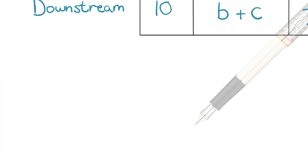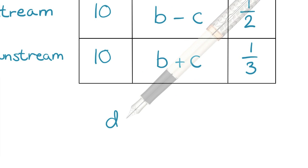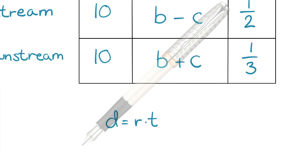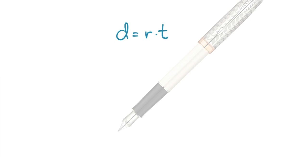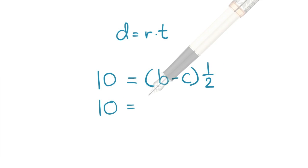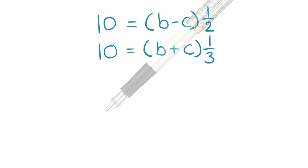Let's begin to solve the problem. In a uniform motion problem, we use the equation distance equals rate times time. Since we have two unknowns, b and c, we need two equations. Using the chart and plugging in d, r, and t: 10 equals the product of b minus c and one-half—the upstream equation—and 10 equals the product of b plus c and one-third—the downstream equation. The two form a system of equations, or a simultaneous set of equations.